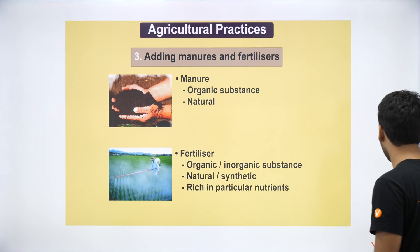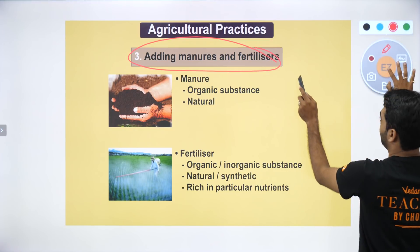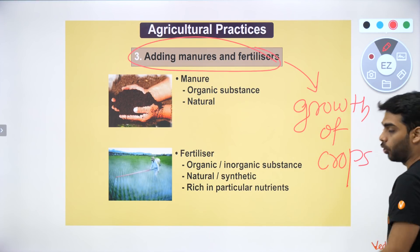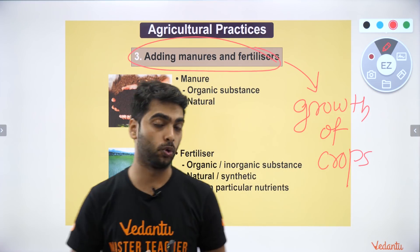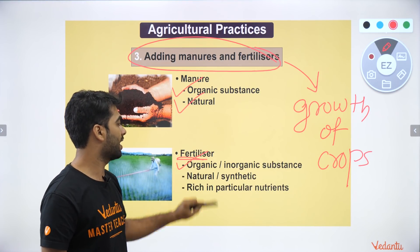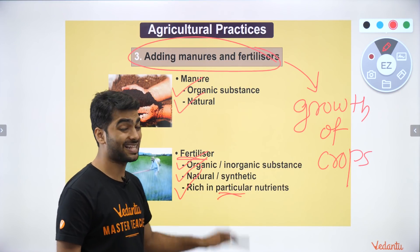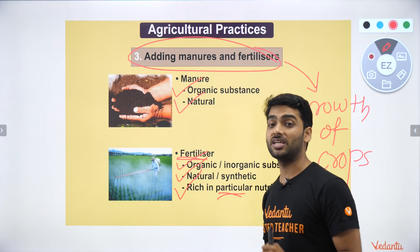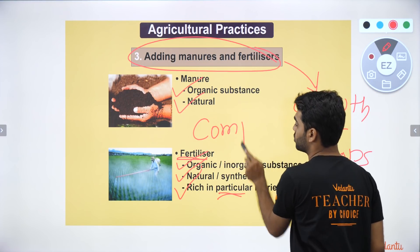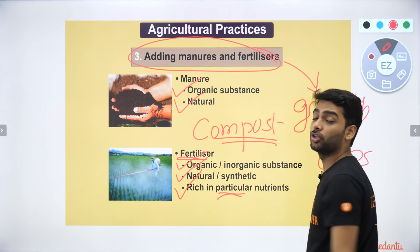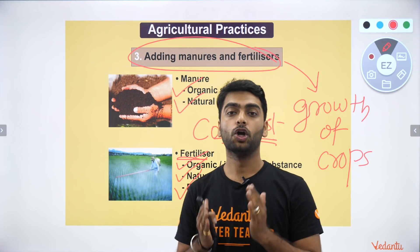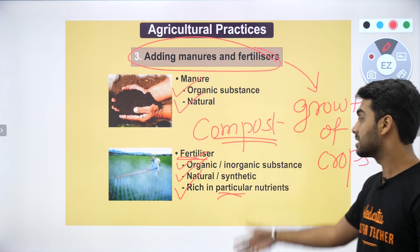Adding manures and fertilizers is very important for the growth of crops. Manures can be organic, also called compost. Fertilizers can be organic, inorganic, natural, or synthetic. NPK fertilizer is rich in nitrogen, phosphorus, and potassium. These provide the required nutrients in the perfect quantity for growing crops so that you obtain a good yield.